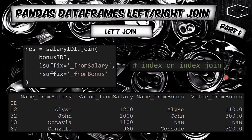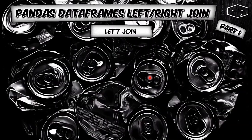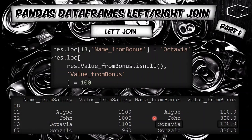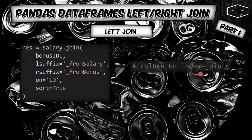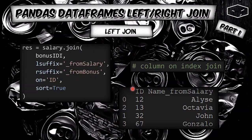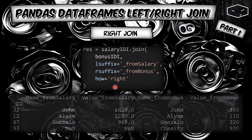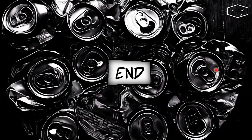This was an index-on-index join. We also saw how to fill empty values with the loc function, getting Octavia with value 100. We saw how to do a column-on-index join using the 'on' parameter when salary doesn't have id as an index. The sort parameter allows sorting the final result by id. For the right join, we provided the 'how' parameter with the value 'right'. Please like the video if you found it helpful, and thank you for watching.